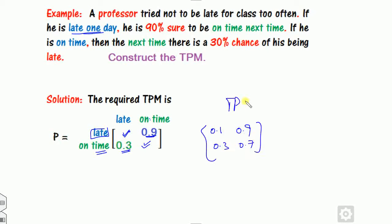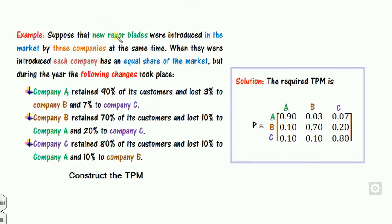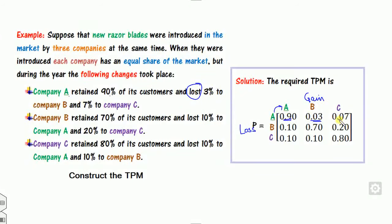For the razor blades example, note the language difference: here 'retained' and 'lost' refer to row-wise behavior (past behavior), unlike the previous market example where 'gained' referred to column-wise (future) behavior. Company A retains 90%, loses 3% to B and 7% to C. Company B retains 70%, and so on. Construct the TPM accordingly.